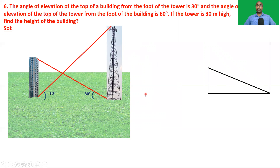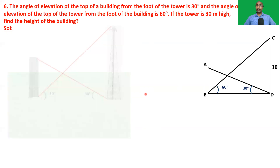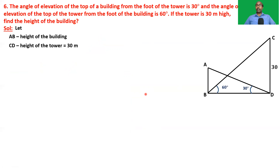Draw the figure for the given scene. Label it A, B, C, D. The height of the tower CD = 30 meters. AB is the height of the building. Given: angle ADB = 30 degrees and angle CBD = 60 degrees.